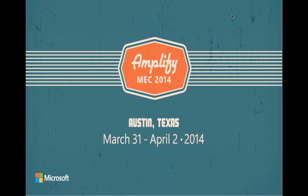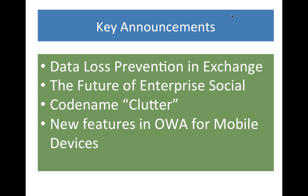There were probably a dozen announcements at the keynote. The things that really caught my attention were: data loss prevention in Exchange — DLP; the future of enterprise social and how social networking affects enterprise messaging; something called codename Clutter; and new features in OWA for mobile devices. OWA is Outlook Web Access or Outlook Web App. There were probably 150 to 200 breakout sessions.